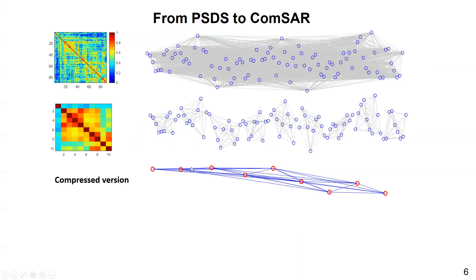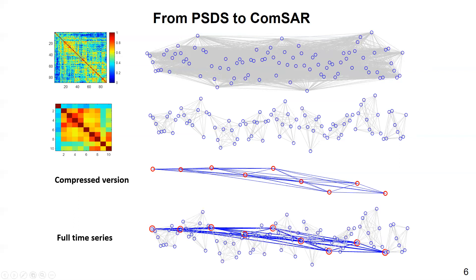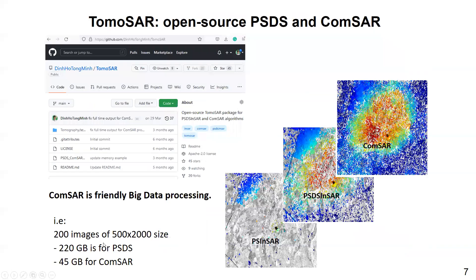We process only 9 images at a time. In this way, whenever a new acquisition comes, we do not need to recalculate everything again. Such compressed images can be used as the datum to link the history of mini-stacks with recent acquisitions, and therefore be able to recalculate all phase time series. When it comes to memory requirements with 200 images over a 500 by 2000 scene: 220 gigabytes for PS-DS, but only 45 gigabytes for ComSAR. Thus ComSAR is much more efficient for big data processing.